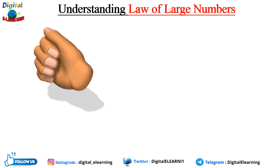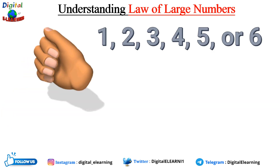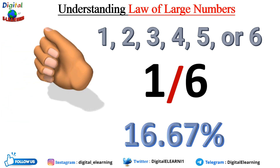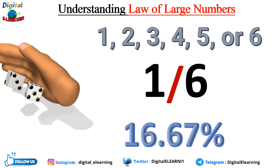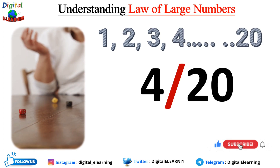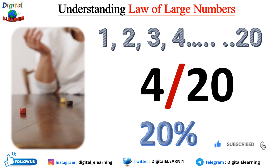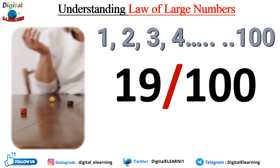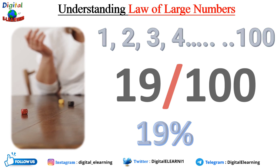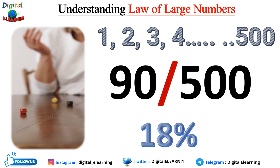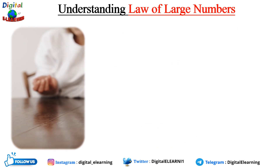Now let's take an example of a fair dice. For a single roll, we can get any of six values — one through six — each with a probability of one-sixth, resulting in a 16.67% chance. We conduct a series of experiments with different sample sizes. Rolling 20 times, we get 4 sixes out of 20 rolls, resulting in a 20% proportion of sixes. Increasing to 100 rolls, we get 19 sixes, resulting in a 19% proportion. Increasing to 500 rolls, we get 90 sixes, resulting in an 18% proportion.